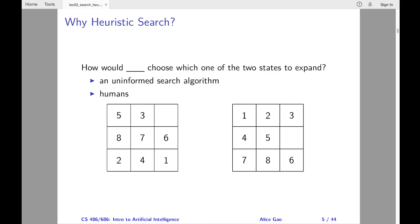What if a human, instead of an algorithm, is making the decision? A human would most likely expand the state on the right, since this state is much closer to the goal.